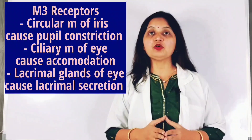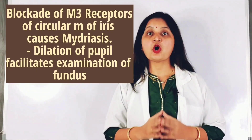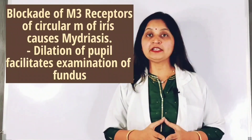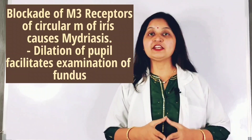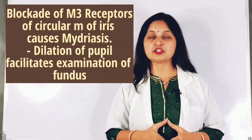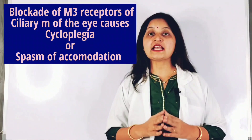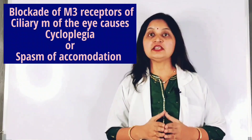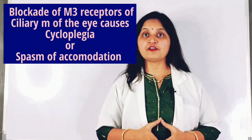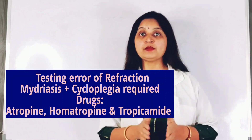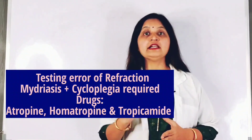Anti-muscarinic agents block muscarinic receptors of the circular muscle of the iris, causing mydriasis or dilatation of the pupil. Because of this, anti-muscarinic agents such as atropine can be used for fundoscopic examination. Blockade of M3 receptors of the ciliary muscle causes cycloplegia or paralysis of the ciliary muscle, causing spasm of accommodation, so the eye is fixed for distant vision. For testing errors of refraction, both mydriasis and cycloplegia are required.